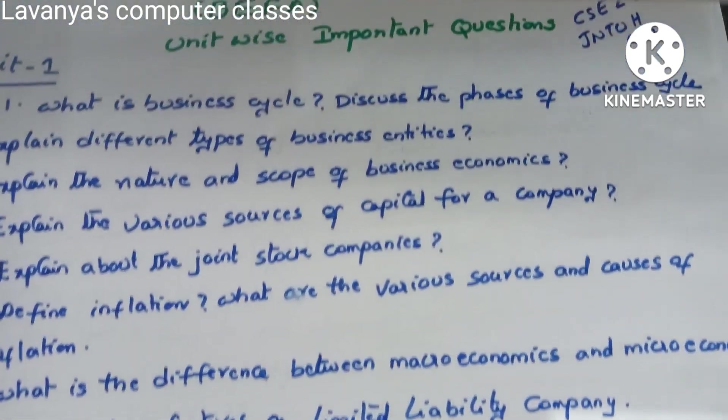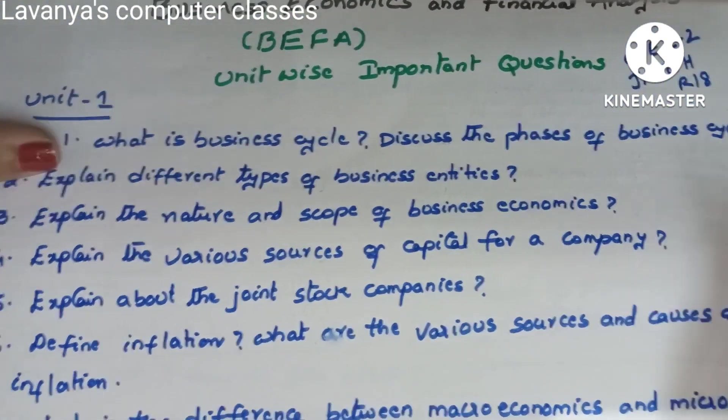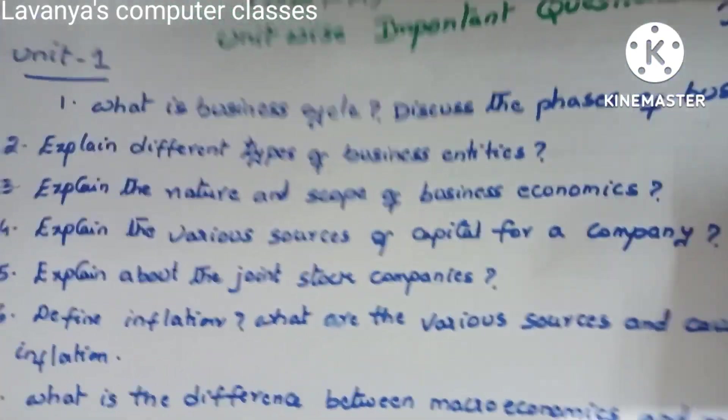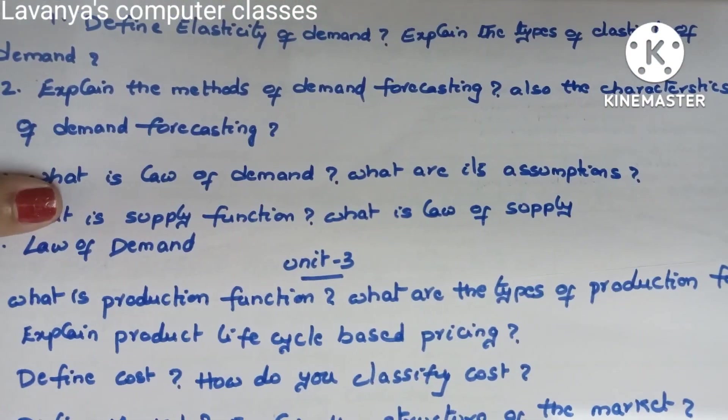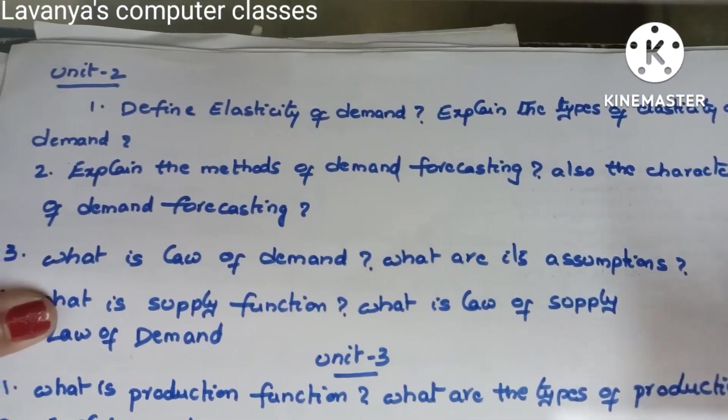Next: explain the features of a limited liability company, and explain about non-conventional sources of finance. These are all the questions in unit one. Take printouts and read all these questions. I will give only theory important questions, not programming problems.